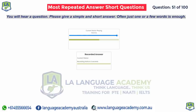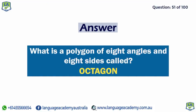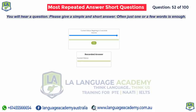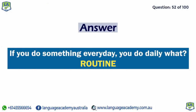What is a polygon of eight angles and eight sides called? Octagon. If you do something every day, you do it daily — what do you call that? Routine.